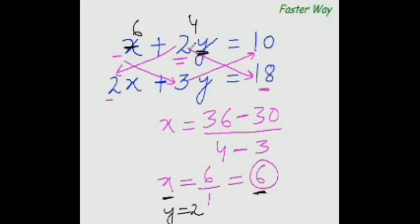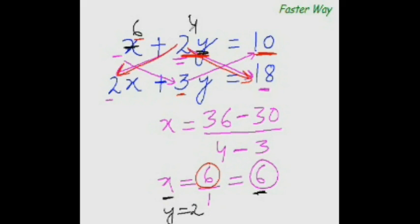To find x, multiply this with this: 2 times 18 is 36. Subtract the product of this and this: 3 times 10 is 30. 36 minus 30 is 6. For the denominator: 2 times 2 is 4, and 1 times 3 is 3. 4 minus 3 is 1. So x equal to 6. To find y, substitute x equals 6: 6 plus something equals 10, so 6 plus 4 equals 10. 2 times what equals 4? 2 times 2 equals 4. So y equal to 2. As simple as that.